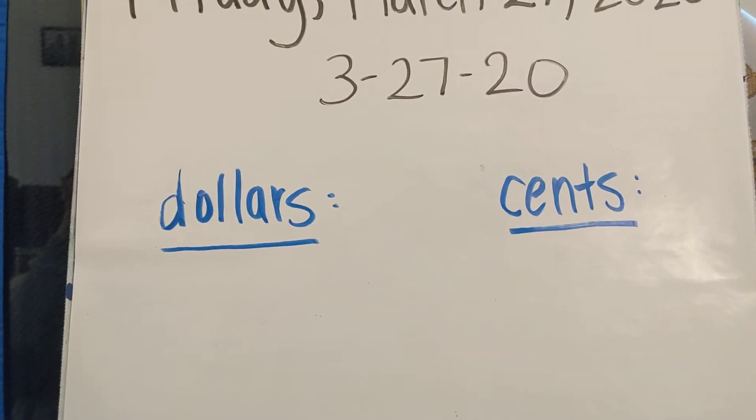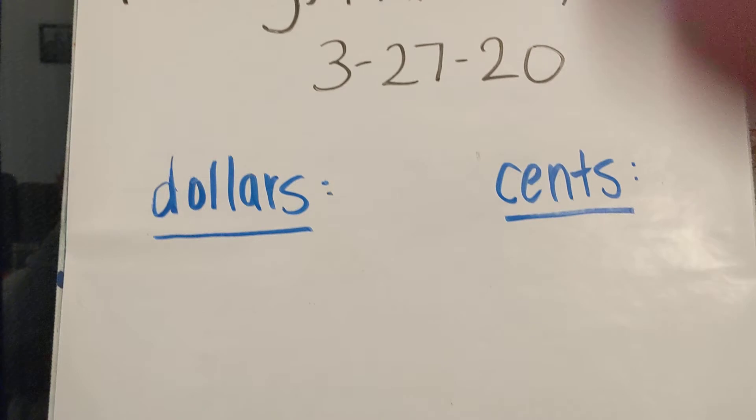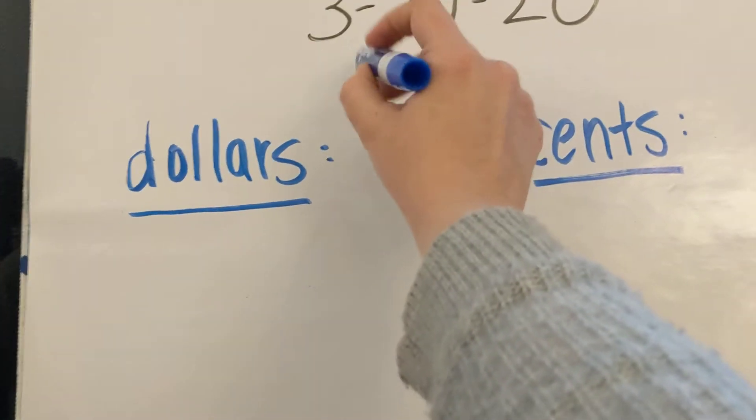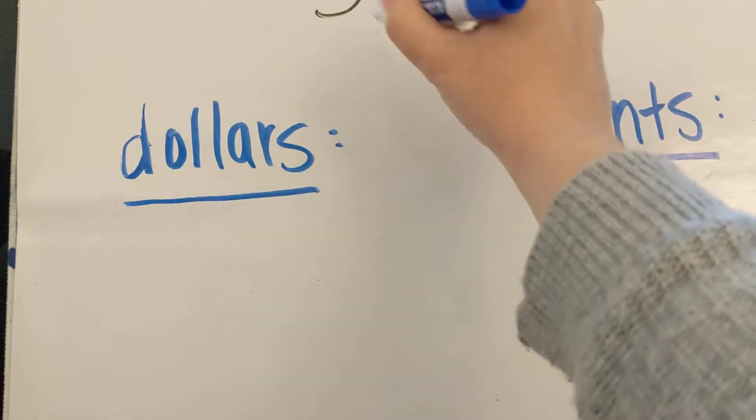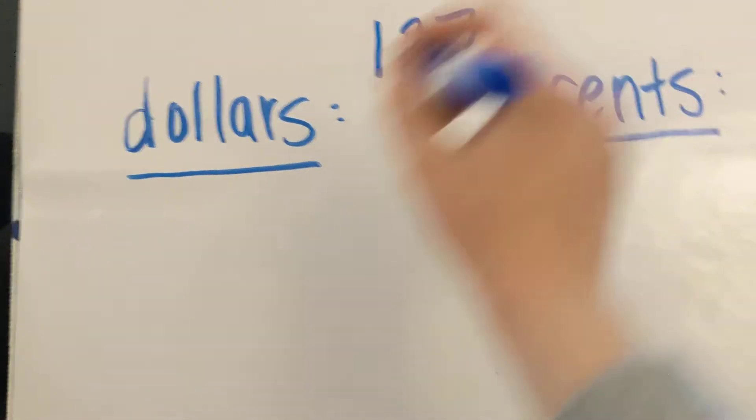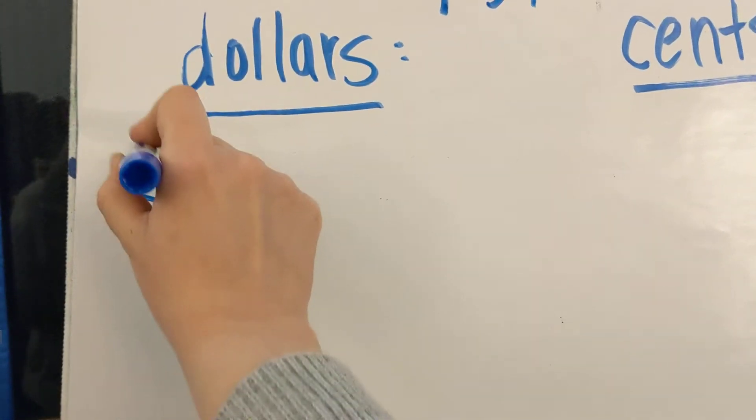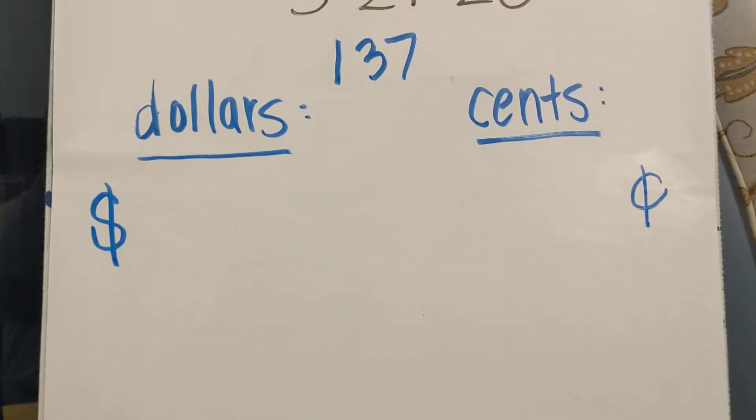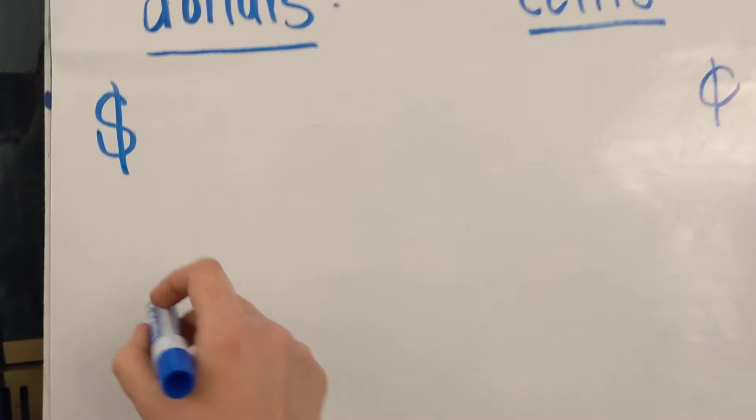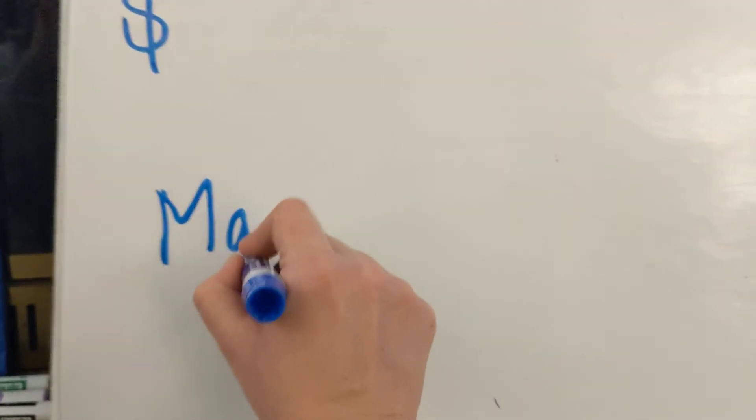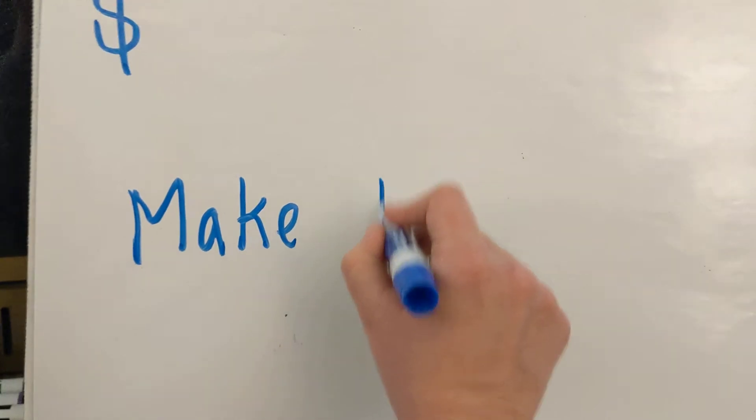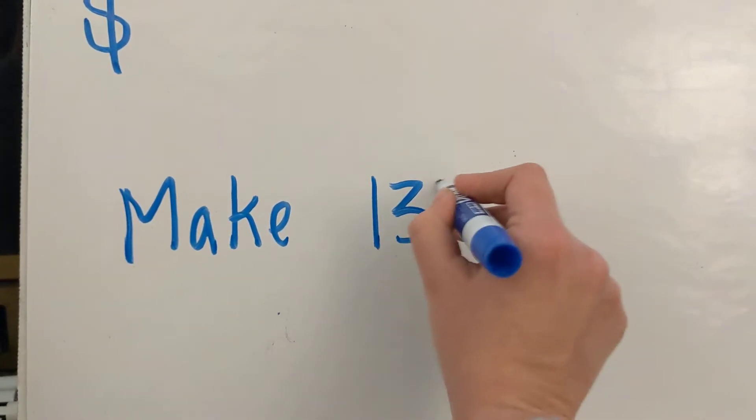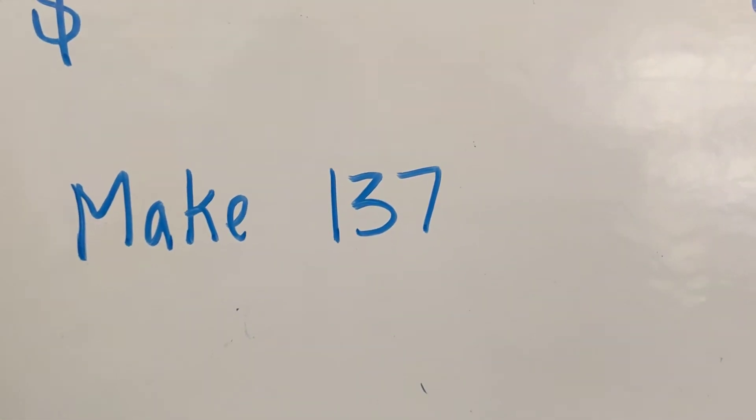So what I'm going to go ahead and do now is, and I want you guys to follow along with me, let's write one hundred thirty-seven. Let's do it with a dollar sign, and let's do it with a cent sign. Remember how those two are a little bit different? At the bottom, I also want you to count out the coins to make one hundred thirty-seven.